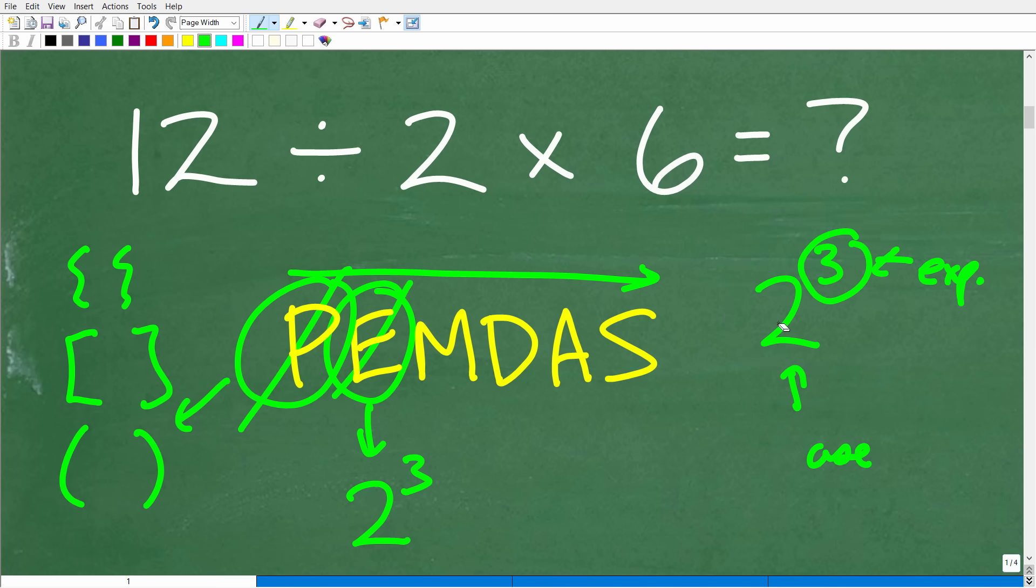Let's talk about these last steps. And this is where most of the confusion comes in, in terms of the order of operations. M, D, A, and S. M stands for multiplication. D stands for division. A stands for addition. And S stands for subtraction.